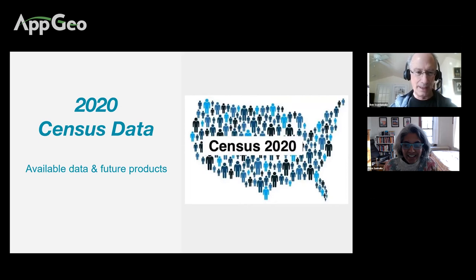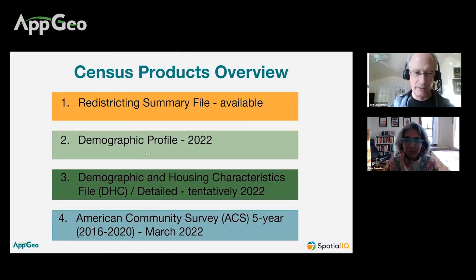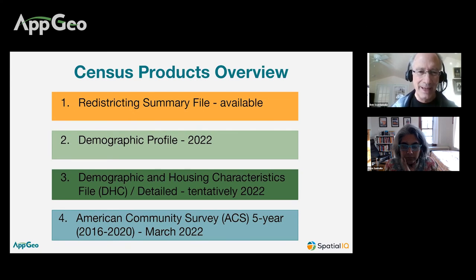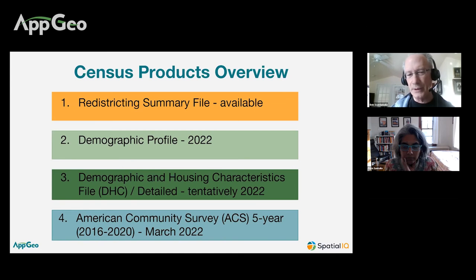What data is available? The products overview breaks into four categories. The first, the redistricting file, is currently available — it meets legal requirements and was made available back in September. Most states were available in September of last year. Number two, the demographic profile — we're anxiously awaiting this, and its tentative date is sometime in 2022. Hopefully we'll be looking at this in the early part of the year, but the Census hasn't been more specific.